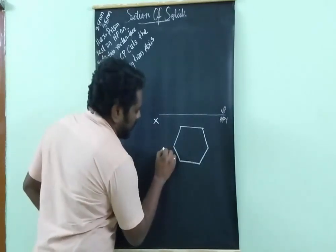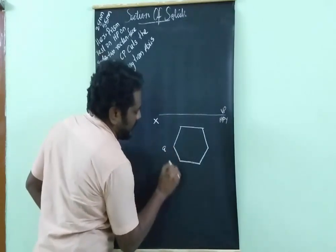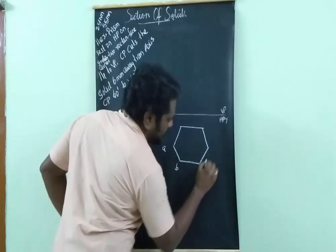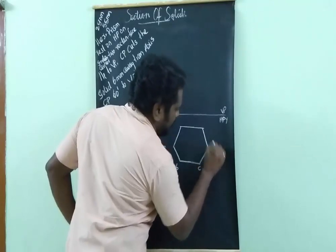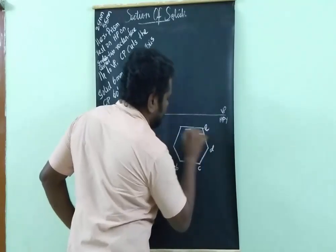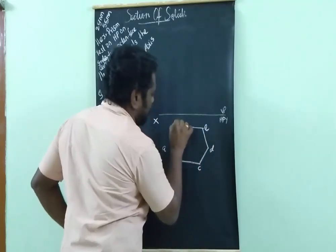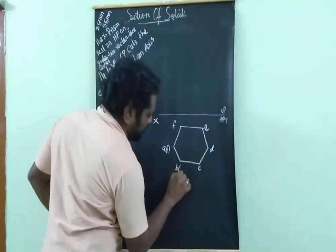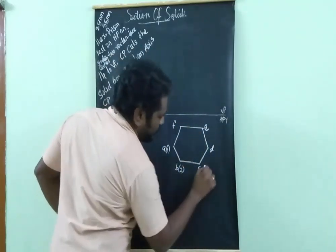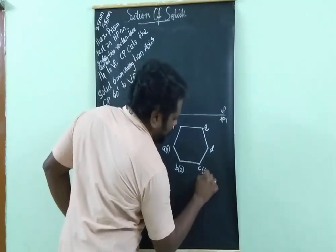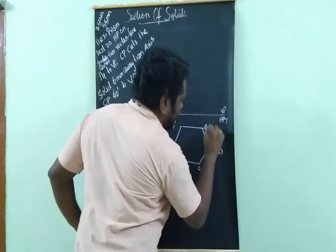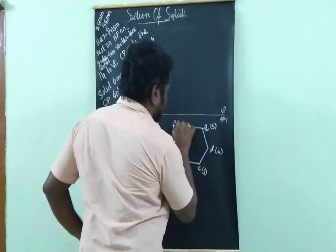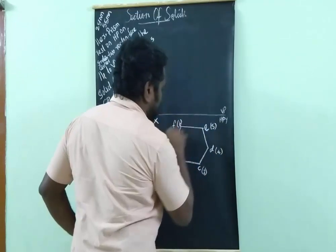Now to name the points: this is point A, B, C, D, E, F. The top face corners are 1, 2, 3, 4, 5, 6.